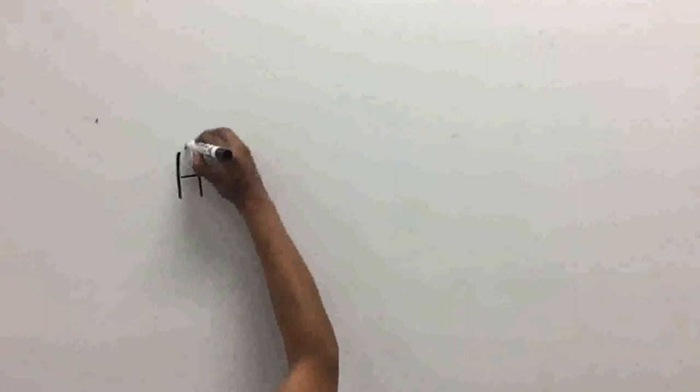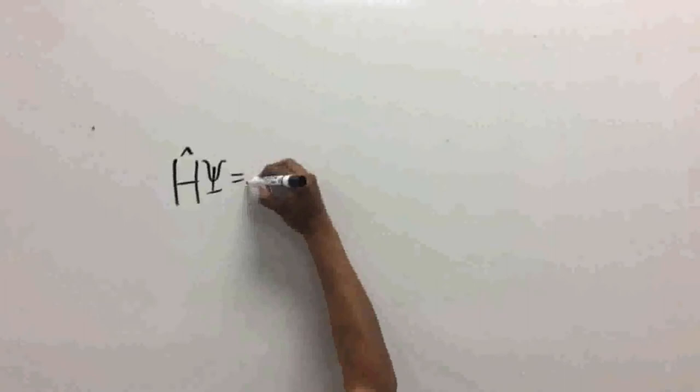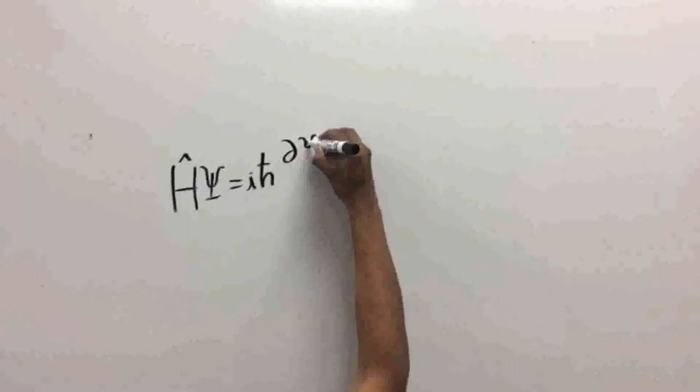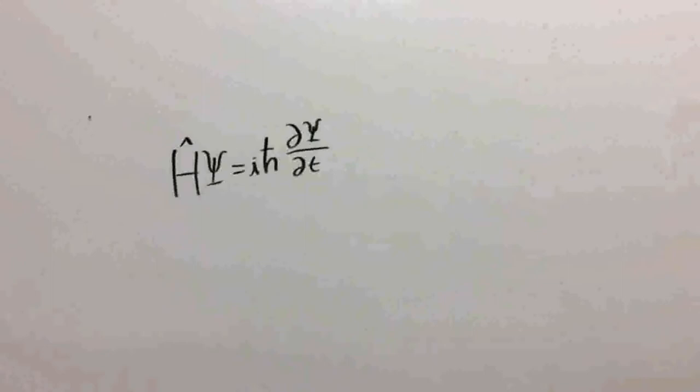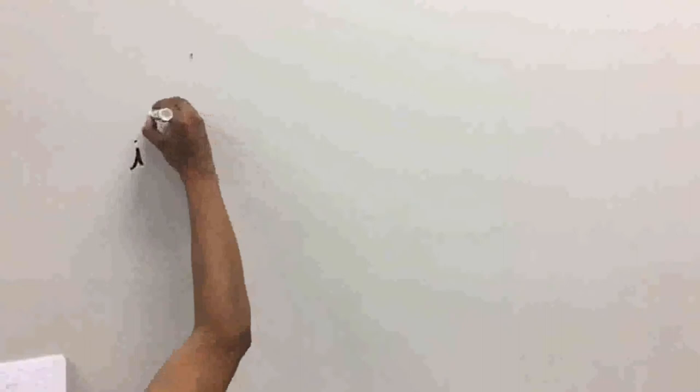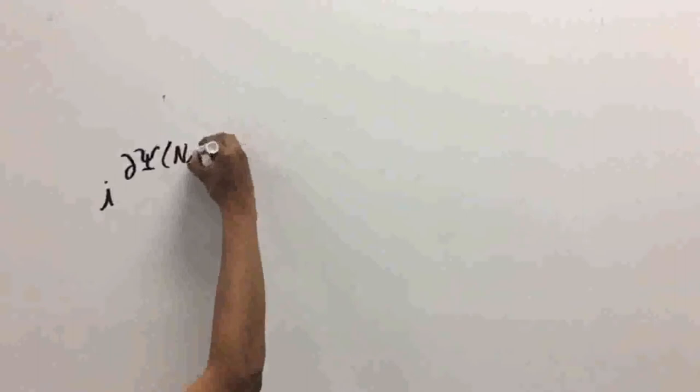This equation can be written in the following form: H multiplied by the wave function equals i h-bar multiplied by the partial derivative of the wave function with respect to time. Writing this equation in a generalized form would give H times the wave function equals i multiplied by the partial derivative with respect to time of the wave function.